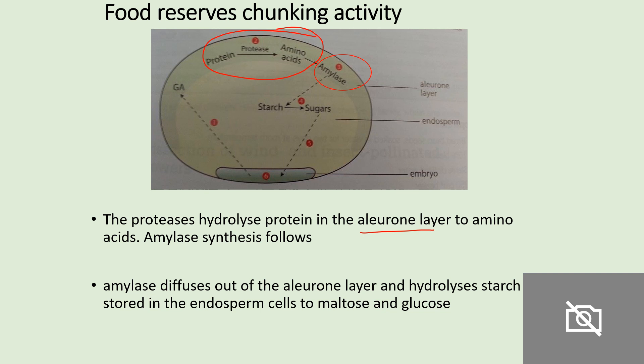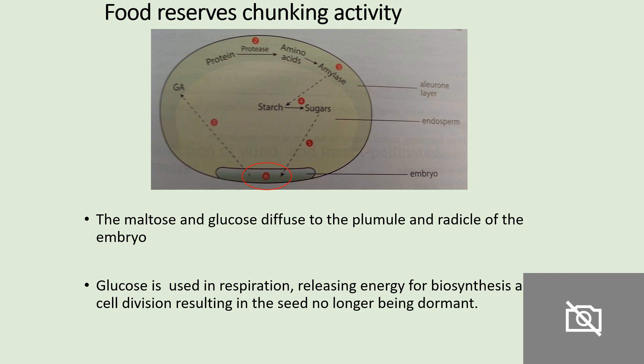The amino acids are then used to synthesise amylase enzyme, and the amylase moves into the inner endosperm layer of the seed. The amylases break down starch into its monomers — alpha glucose — and the alpha glucose diffuses into the growing embryo, where it is used in respiration to release and synthesise ATP, for biosynthesis and cell division.